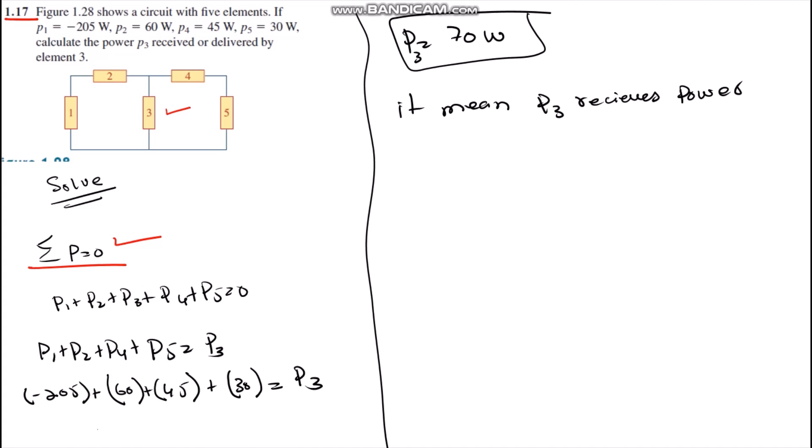And in second step, we just separated power 3 and then we substitute the values of P1, P2, P4, and P5. And after mathematical summation, we get the value of P3 is equals to 70 watts.